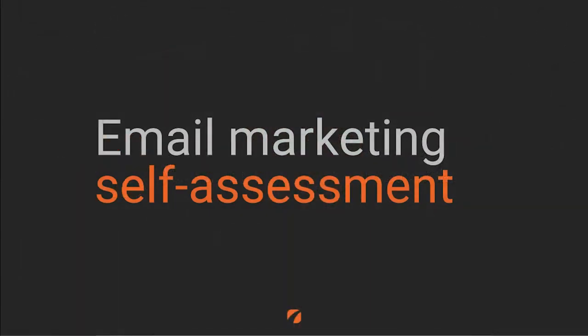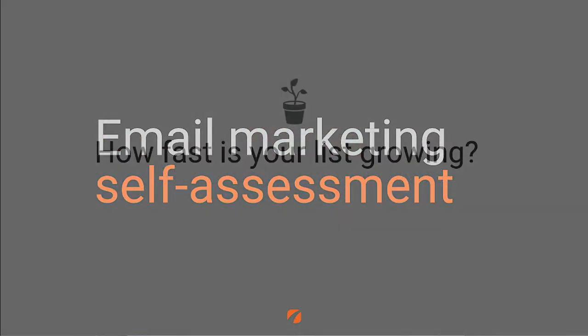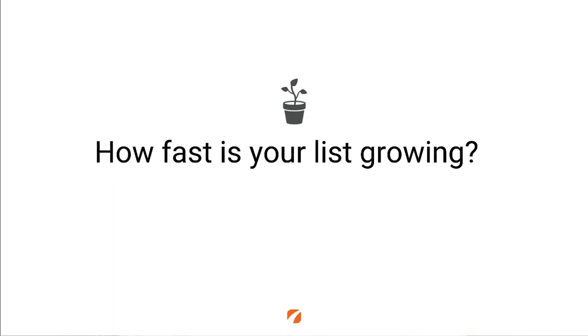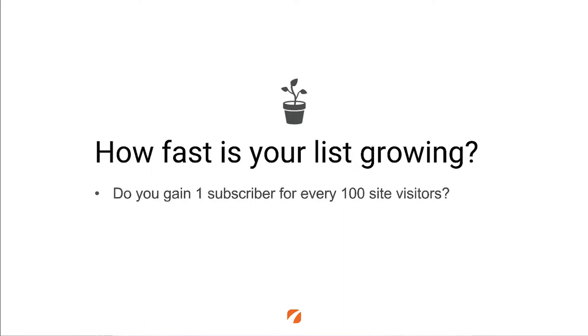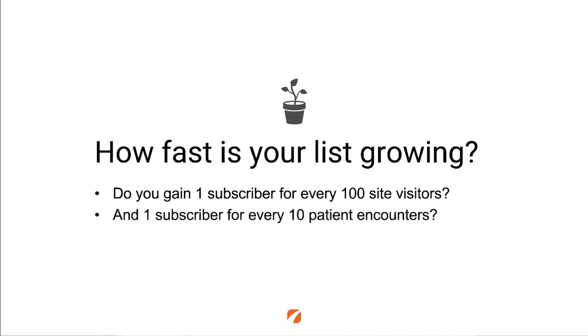Let's talk first about how in the self-assessment we approach one of the most important ideas, which is list growth. There are two important benchmarks here in terms of measuring the rate at which you are adding new subscribers to your list. Generally speaking, we want to see about one new subscriber for every 100 site visitors, and one new subscriber for every 10 patient encounters. Many of the people you treat are past patients who are likely already on that list, and many site visitors are simply there for transactions like finding your address or phone number. You can look at new subscribers over the last 30 days, your patient encounters, and site visits to know how you're doing against that metric.